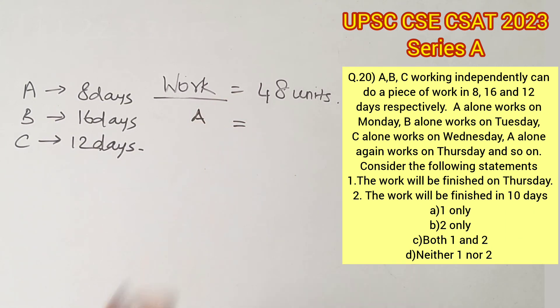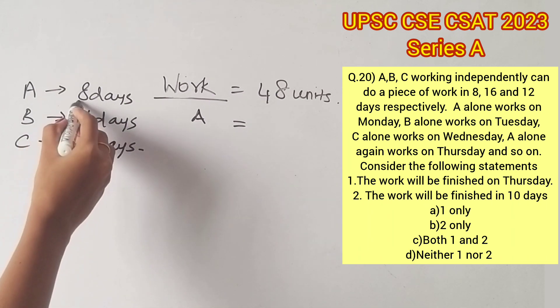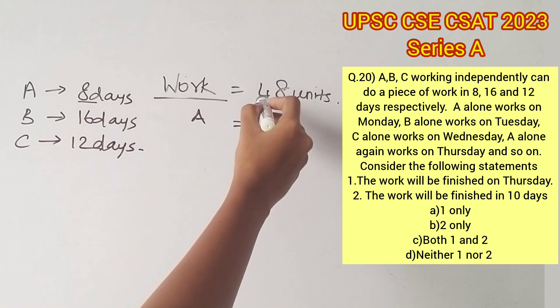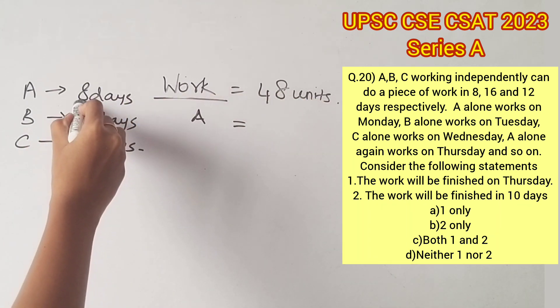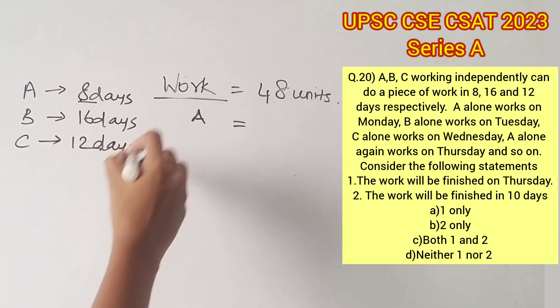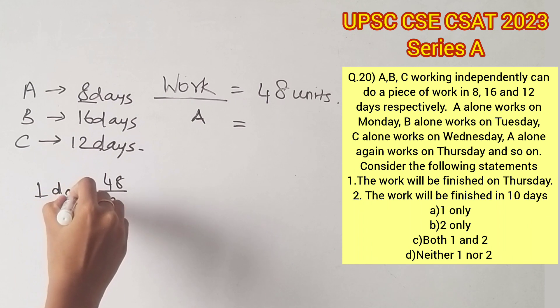If A takes 8 days to complete 48 units of work, it is clear that A can complete 6 units of work in a single day. This can be found by dividing 48 by 8.